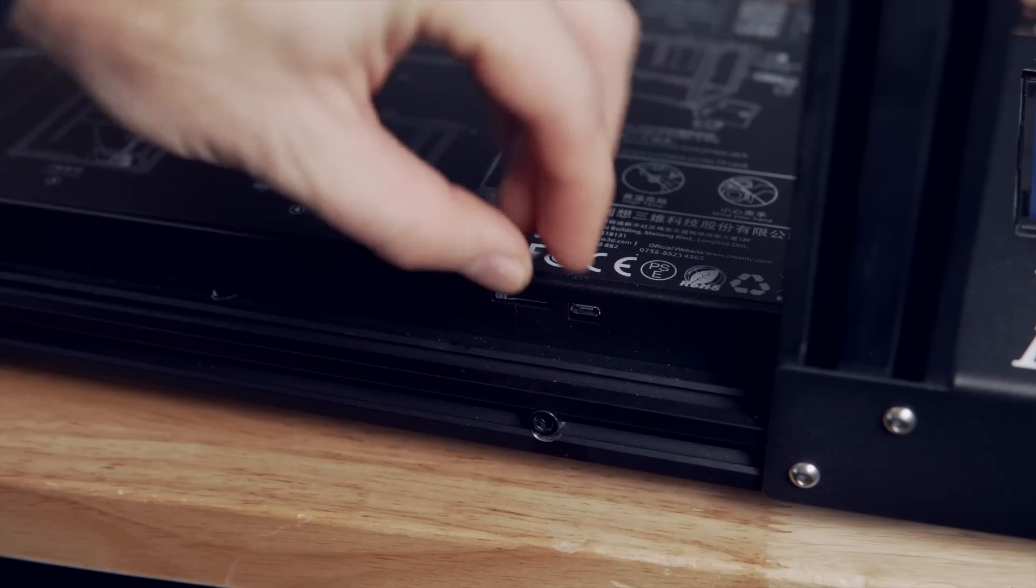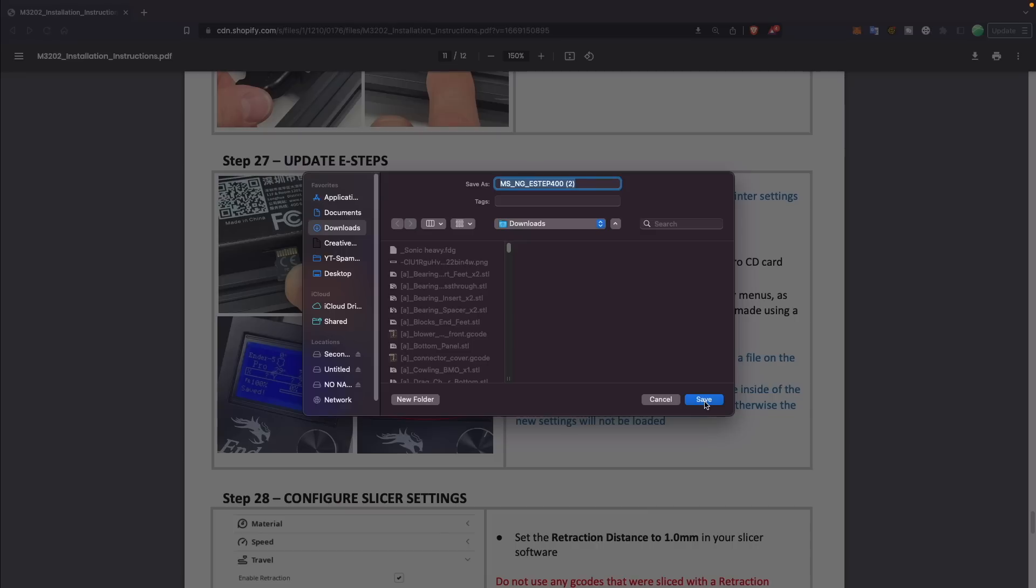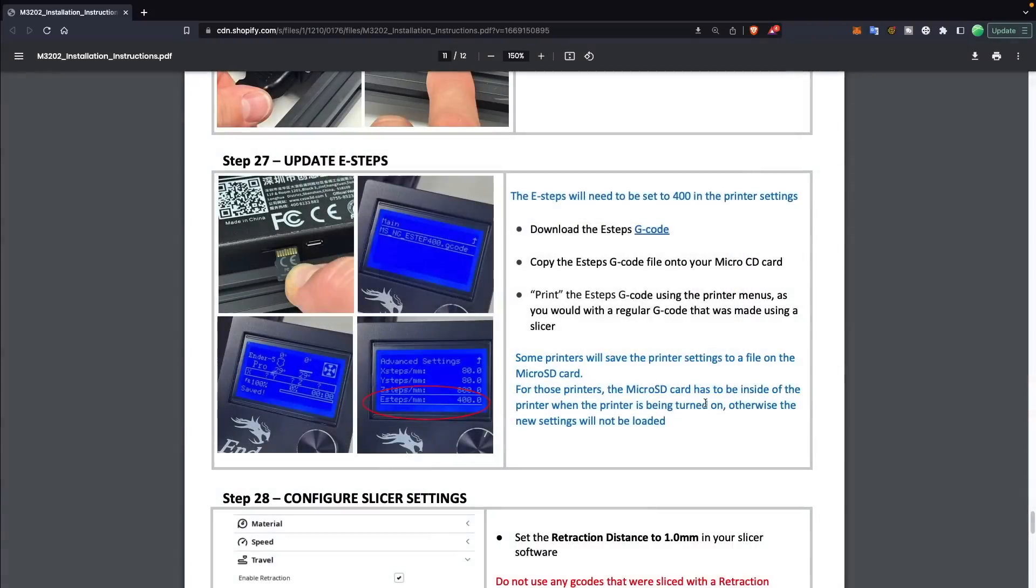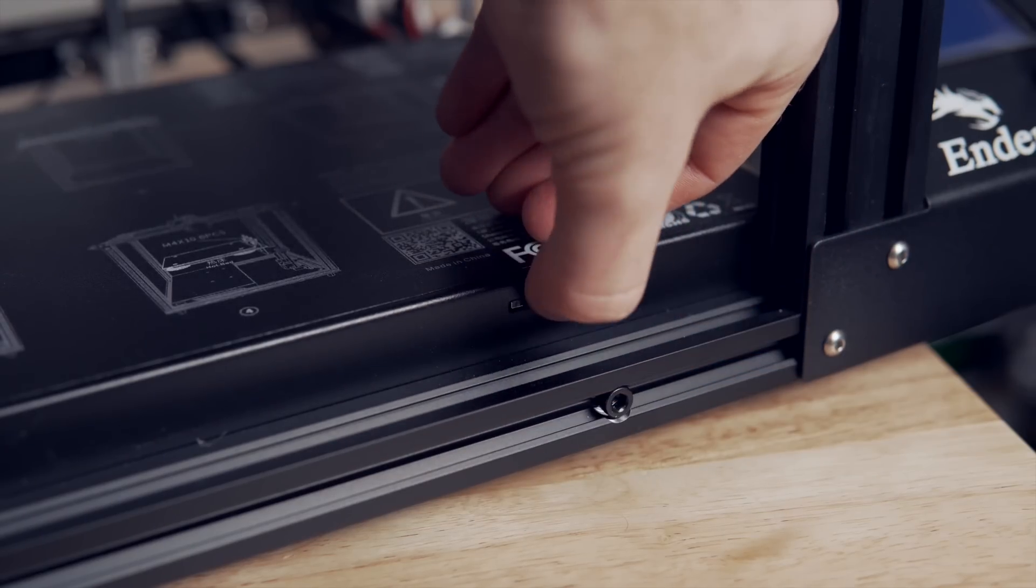The last thing we need to do is update our esteps value for this new extruder. Micro Swiss has made this really easy. They have a G code file on their website that will have linked. You'll just need to go over there, download that G code file and then transfer it over to your printer's micro SD card and then plug that back into your printer.